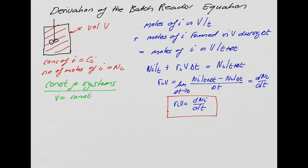Also remembering that we can write Ni in terms of concentration, which is the moles of i per unit volume, times the volume V. Substituting into our equation we get ri·V = d/dt(Ci·V). Since V is constant, this simplifies to ri·V = V·dCi/dt, and therefore dCi/dt = ri.